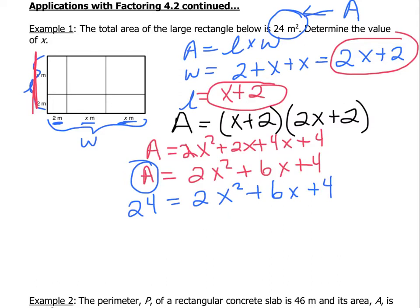Now you need to simplify it so that everything is over to one side of the equal sign. To do that, just subtract 24 on both sides. And we end up with 0 here. And we can simplify that right side. So we get 0 equals 2x squared plus 6x minus 20.